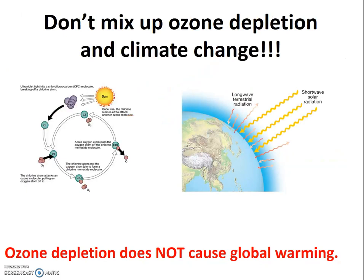Lastly, and very importantly, don't mix up ozone depletion — which we covered in Chapter 3 — and climate change, which we're introducing now. They are very different phenomena, and they're not related in the way that many people think. Also, ozone depletion is a stratospheric phenomenon, whereas climate change is a tropospheric phenomenon.